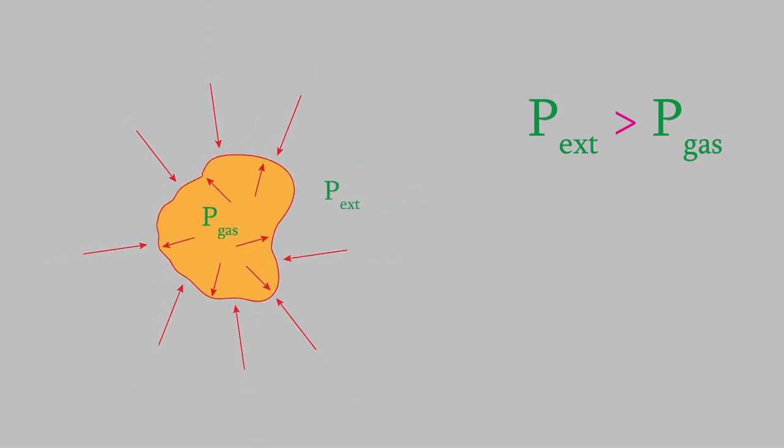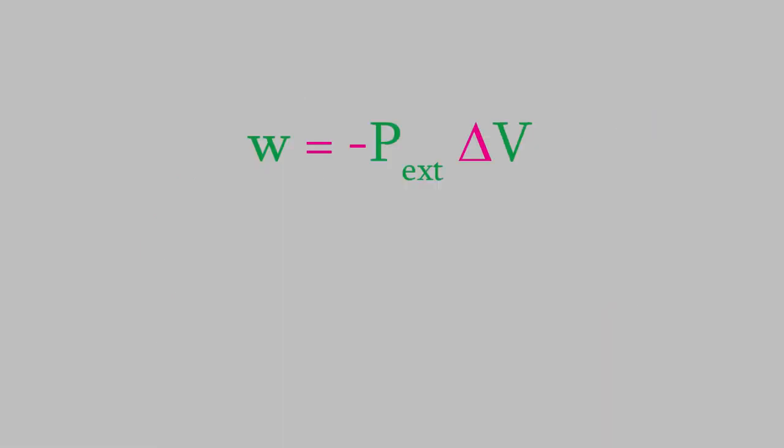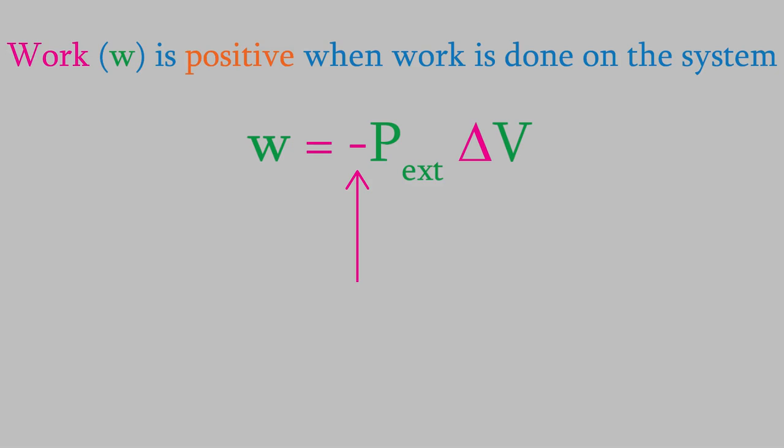It turns out that work can be expressed as negative P_external times the change in volume. There are a couple of things to notice about that equation. First is the negative sign. Why is that there? Well, remember, we said that W is positive when work is being done on the system. But we just saw that when work is done on the system, the system shrinks, so delta V is a negative number. Since we want W to be positive in that case, we need a negative sign on the right side of the equation.